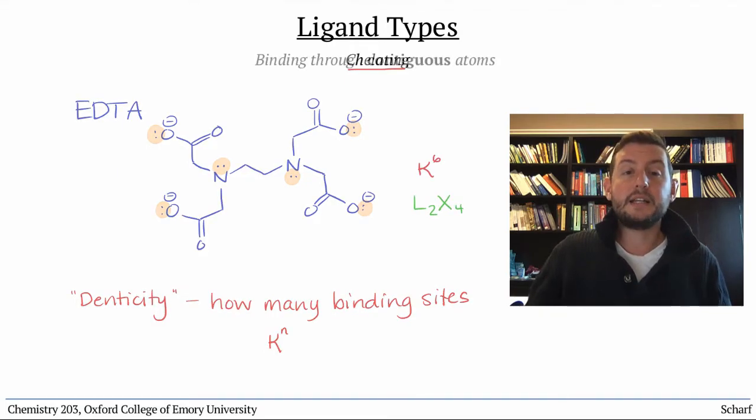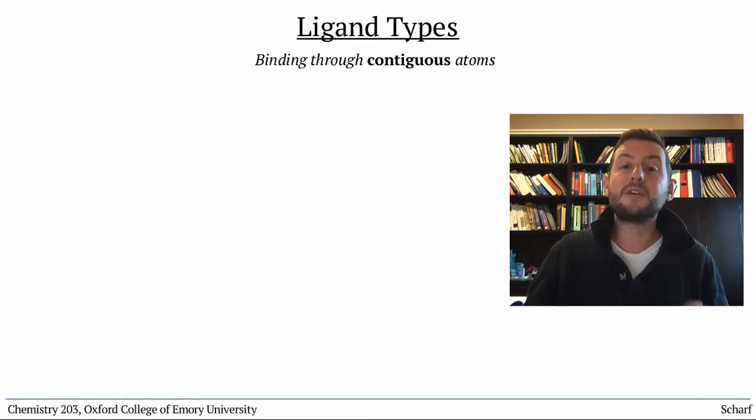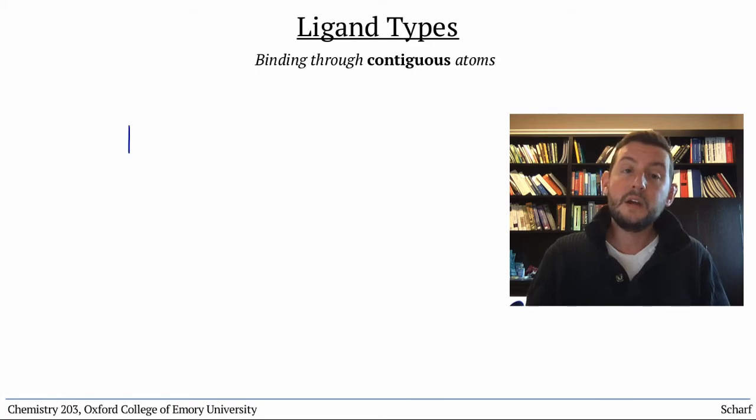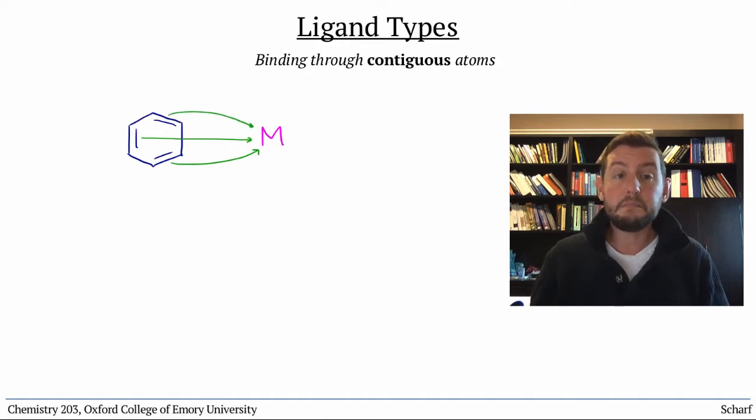Finally, some conjugated compounds can bind using several contiguous conjugated electron pairs. Benzene, for instance, has three CC pi bonding pairs of electrons, and it can donate all of them.